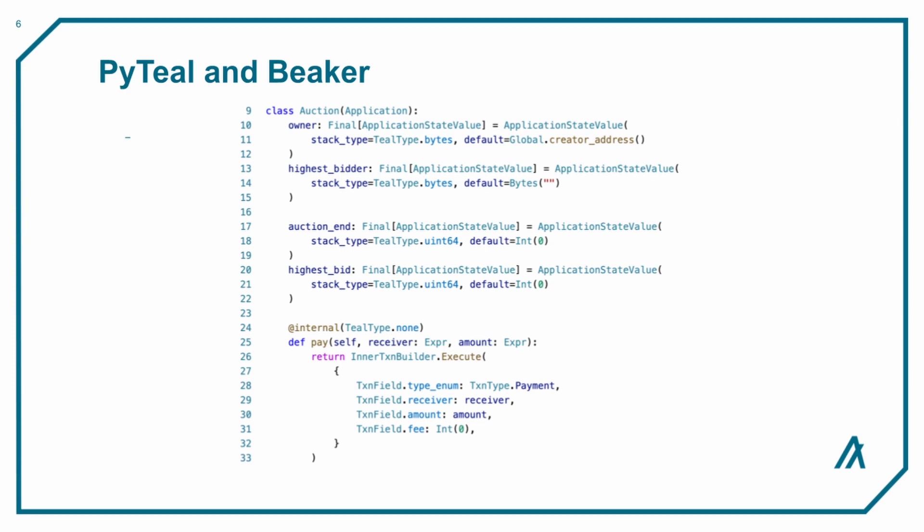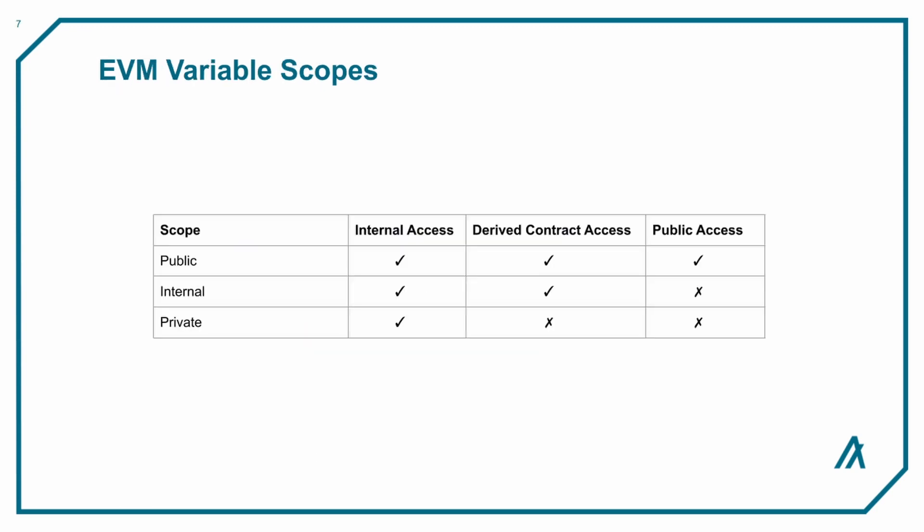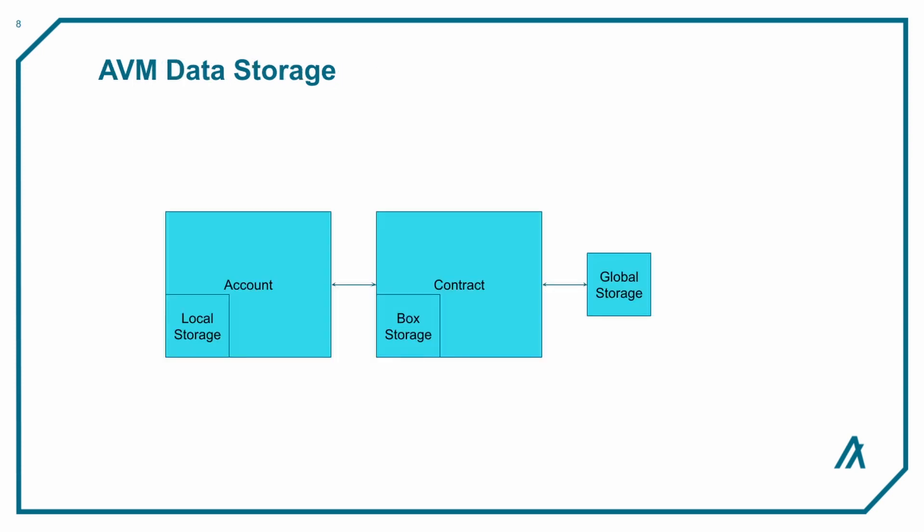AVM and EVM smart contracts have different ways of storing and accessing data. Solidity supports variables in the contract that can have one of three scopes: public, private, and internal. AVM smart contracts, however, have three available types of storage: global, local, and box.